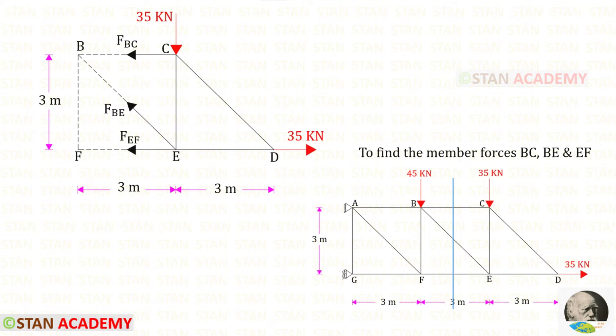To find all three of them we can make a section like this because this section cuts all the three members. At points A and G no need to find the reactions because we are going to take the right side portion and find the member forces.